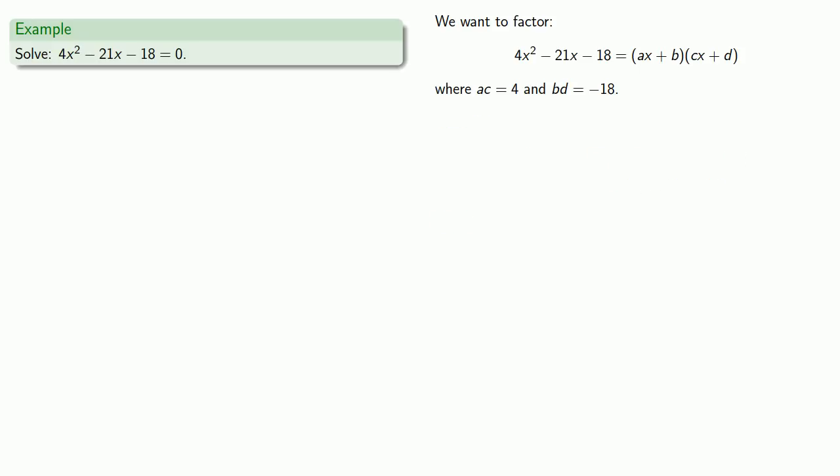How about a different set of numbers? Well, again, 4 and 1 multiply to 4. -1 and 18 multiply to -18. So one possibility is (4x - 1)(x + 18). We'll expand. And it doesn't work.